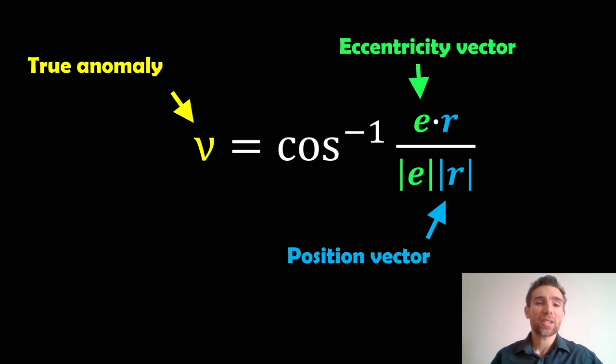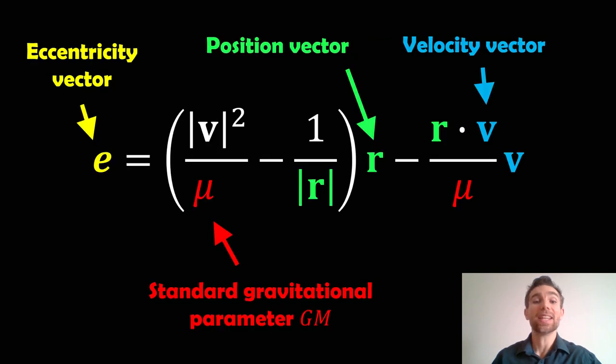And how do you calculate it? Well, if you want to calculate the true anomaly, you can calculate it from the eccentricity vector and also the position vector. So if you don't know what the eccentricity vector is, it's given here. Again, there's a couple of variants of this. This is just one of them I've given you here.